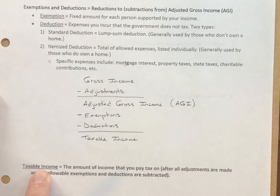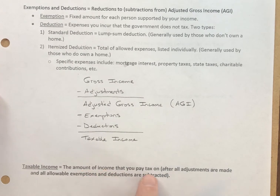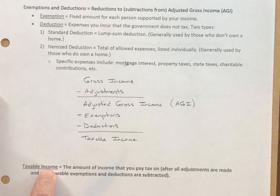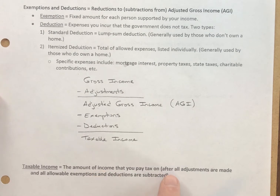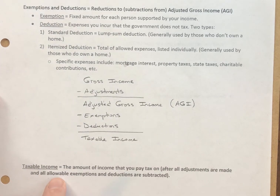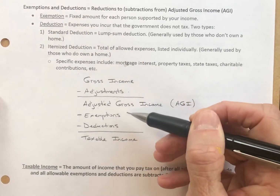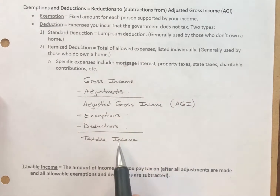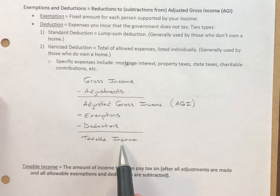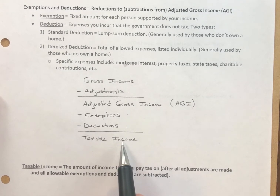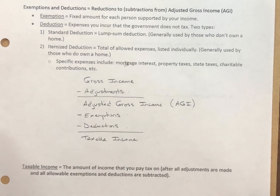That is the amount of income you pay taxes on. Taxable income is calculated after all adjustments are made and all allowable exemptions and deductions are subtracted. A lot of subtraction goes on before you come up with a number that the government then calculates your tax on, which we're going to do in the next video.